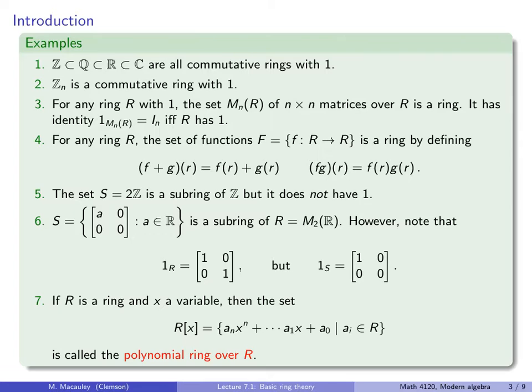Last example: if R is a ring and x is a variable, then the set R[x] — all polynomials with coefficients in R — is called the polynomial ring over x.